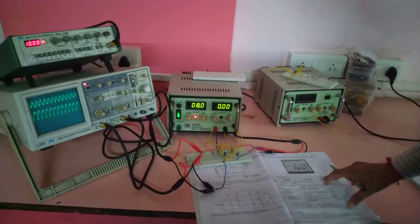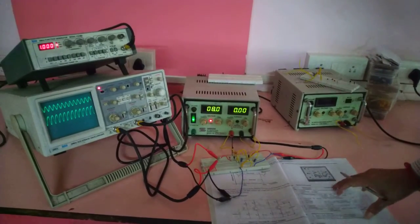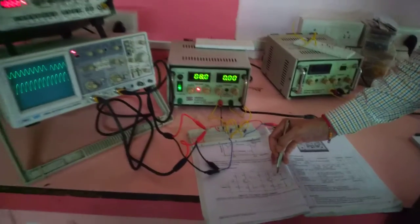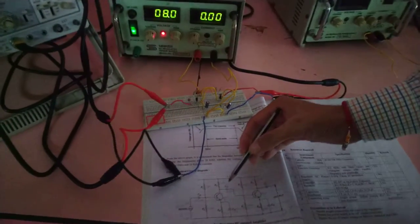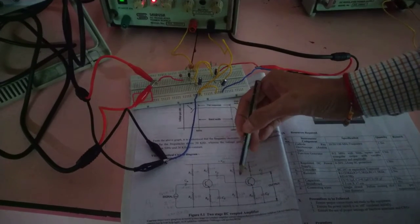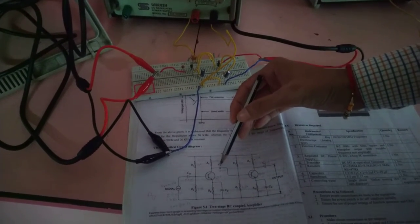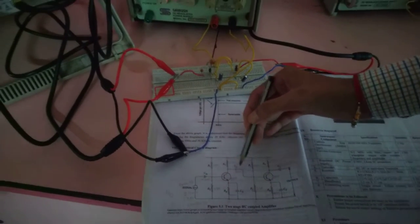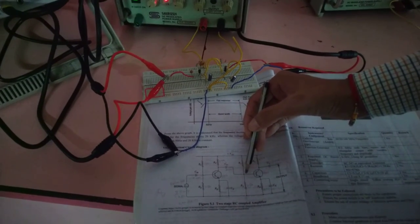Second practical on applied electronics. This is a two-stage RC coupled amplifier, CE amplifiers, common emitter amplifiers. Similar stages are cascaded or coupled with the coupling capacitor CC. So output of first stage is given as the input for the second stage.